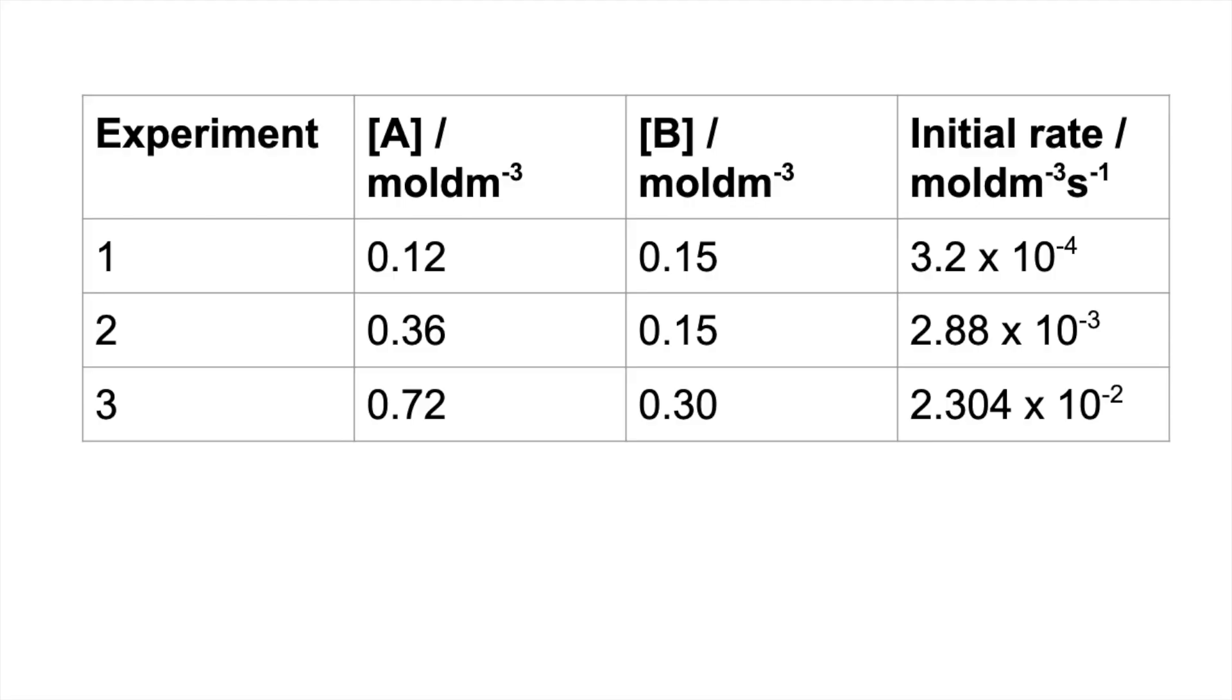So like I said at the start, it's going to be fairly straightforward to work out the order with respect to A. So using experiments 1 and 2, you can see that A's concentration has trebled, and the initial rate, if we divide this number here by this number here, we can see how many times bigger this is—it's 9 times bigger. So a 3-fold increase in the concentration of A has led to a 9-fold increase in the initial rate, and so therefore A must be second order.